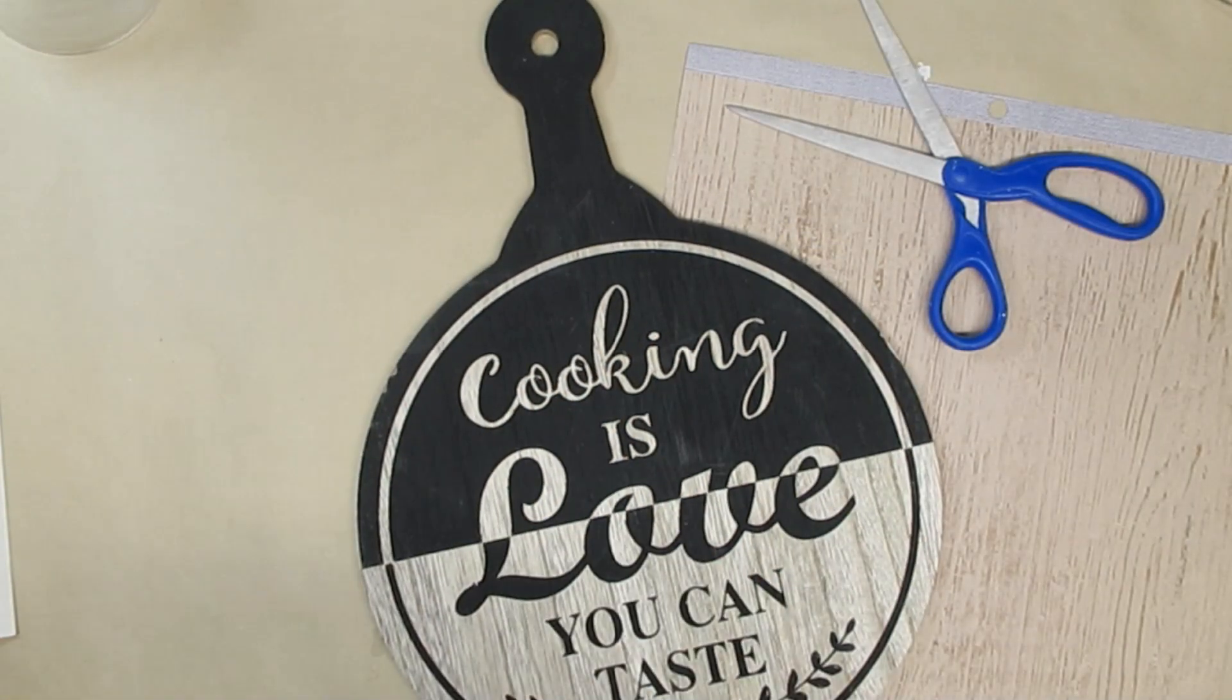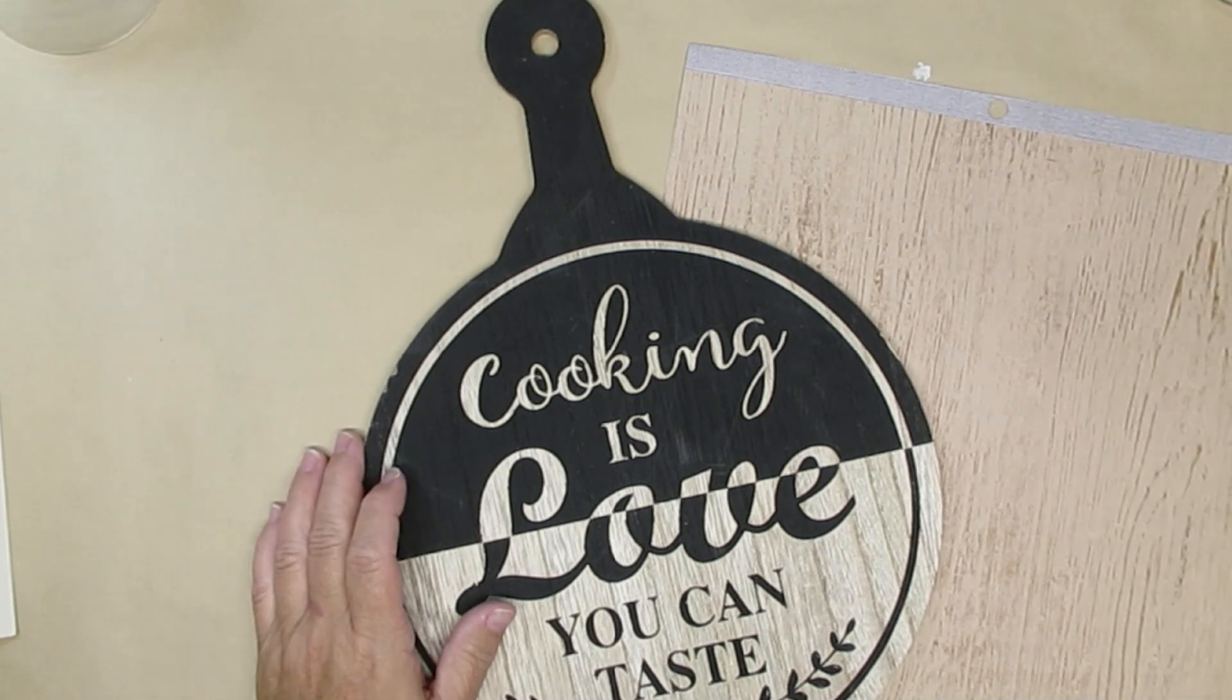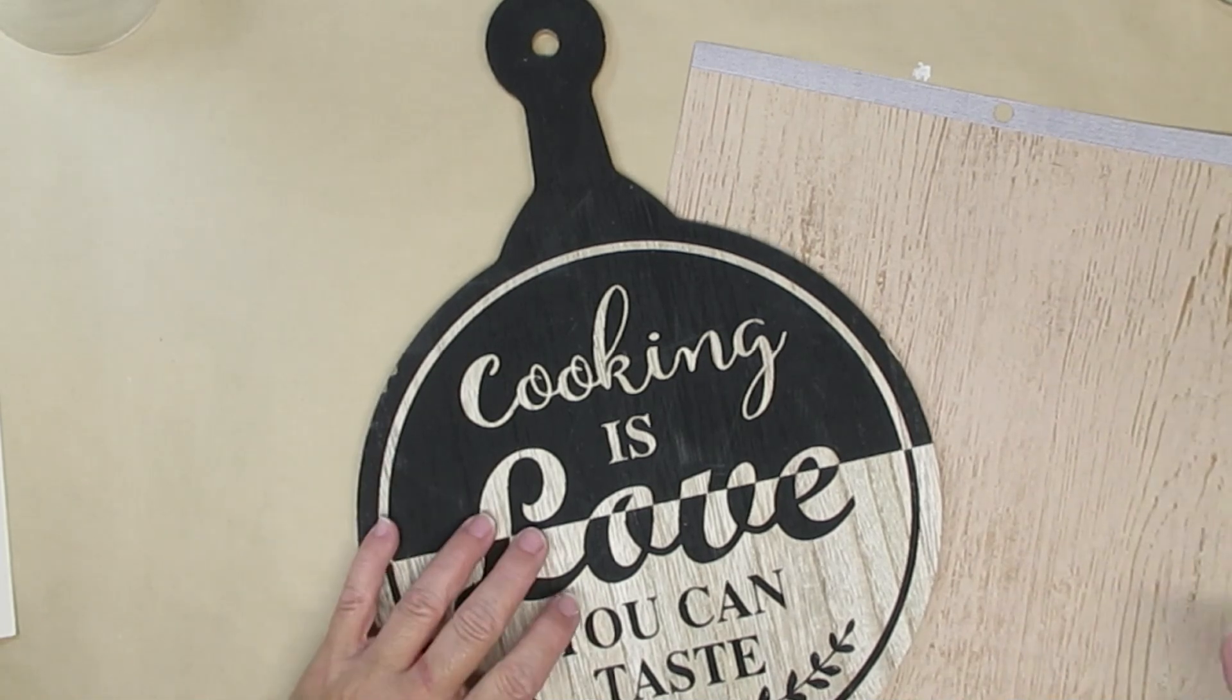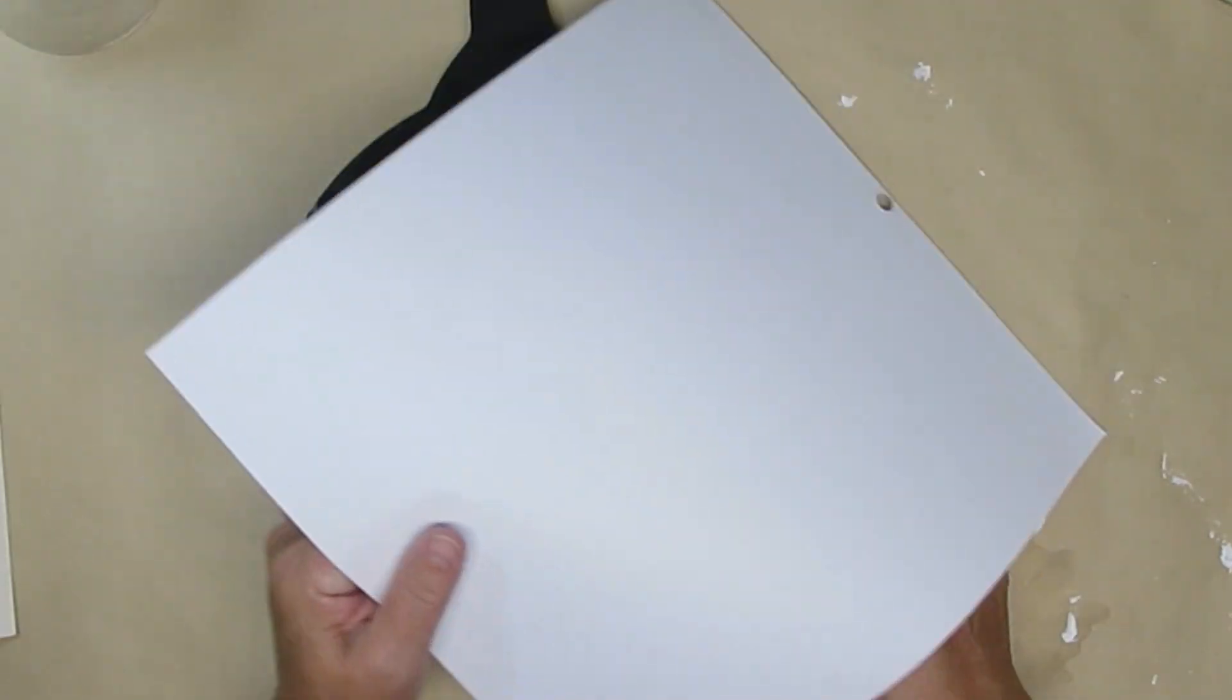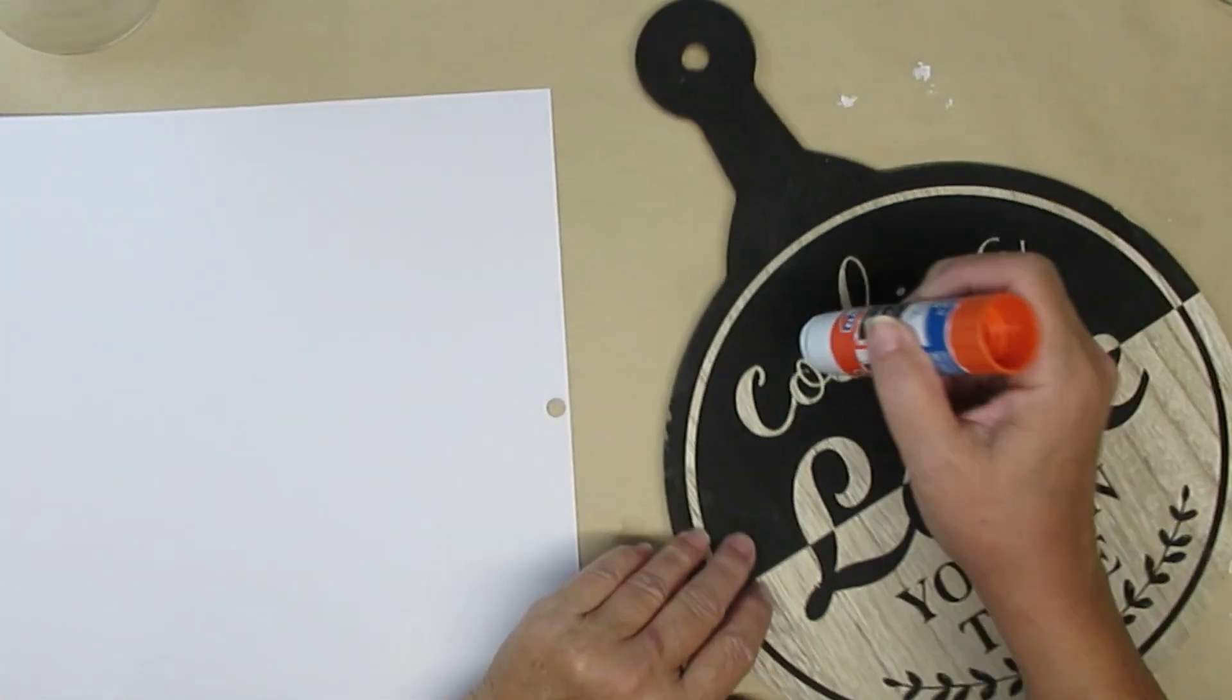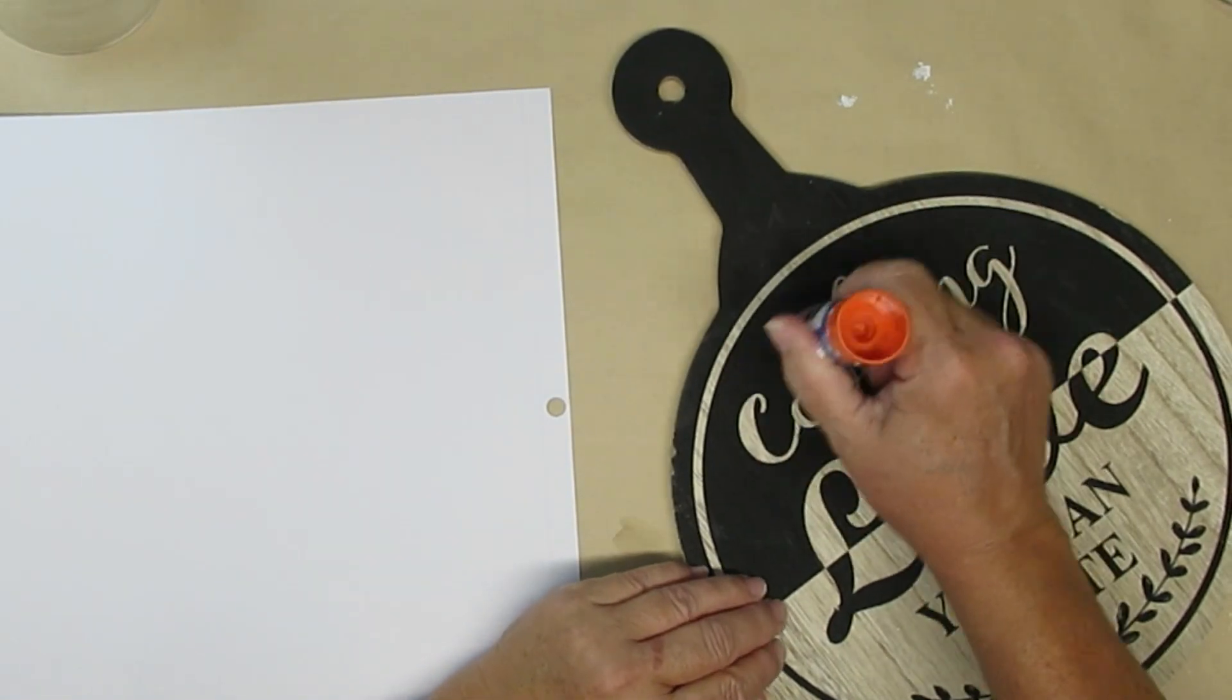I'm starting this project off with this decorative board. I'm going to use a glue stick and attach this scrapbook paper to the top of it. I'm going to leave the handle black because I like the look of that and I'm just going to use a glue stick to get the paper onto the board.